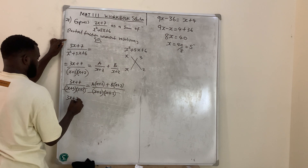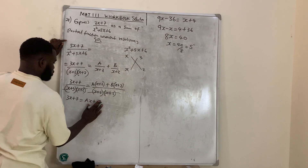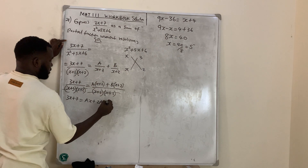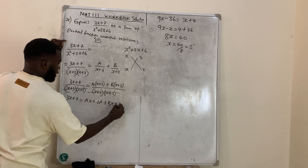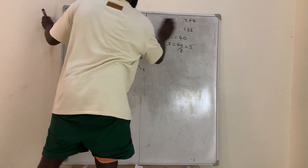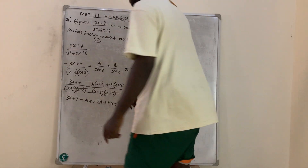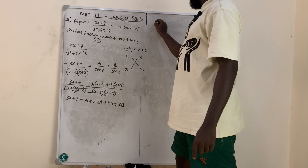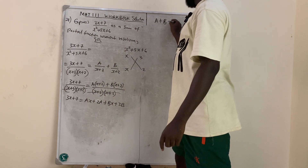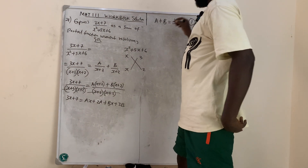So 3x + 7 equals Ax + 2A + Bx + 3B. Now let us compare. Who has x on the right-hand side? A has x and B has x. So (A + B) = 3 — call it equation 1. Who does not have x? 2A and 3B do not have x, so 2A + 3B = 7 — call it equation 2.